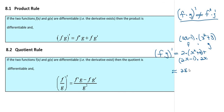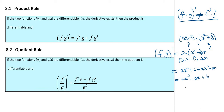Simplifying: 2 times (x squared plus 3) gives 2x squared plus 6, and (2x minus 1) times 2x gives 4x squared minus 2x. Combining like terms: 2x squared plus 4x squared gives 6x squared, so the final answer is 6x squared minus 2x plus 6.